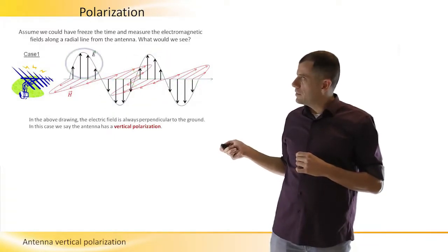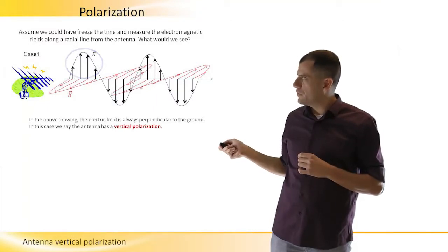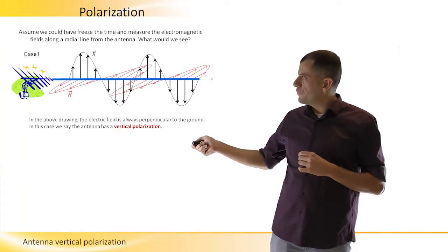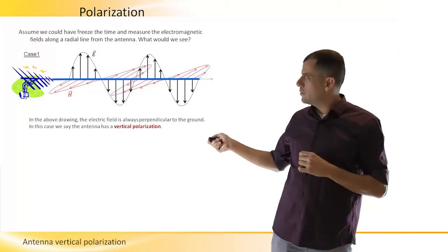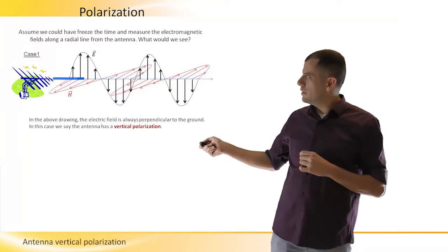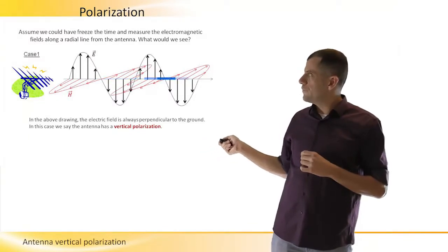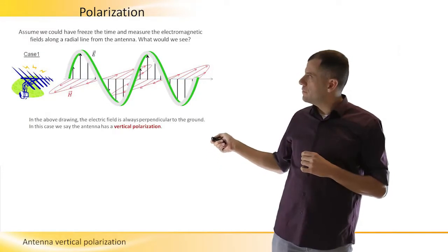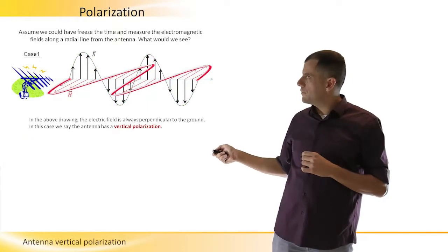The magnitude of the power is represented by the length of the arrow, and the direction is represented by the direction of the arrow. So, we have frozen the time and we look along this line, which starts from the antenna and away from it. And we see a sine wave of electric fields and a sine wave of magnetic fields.